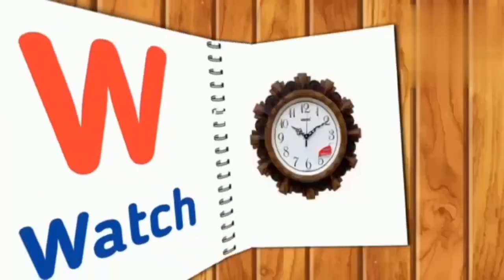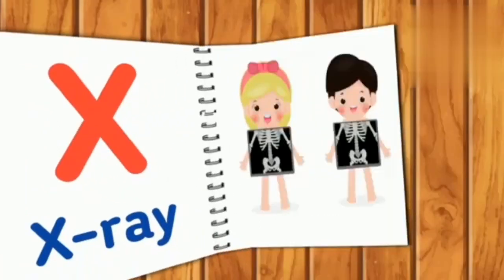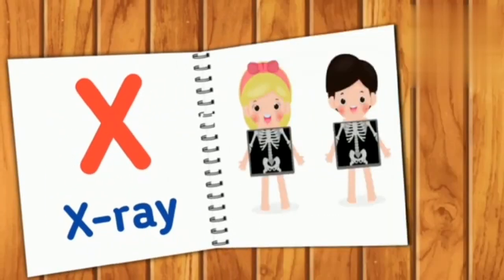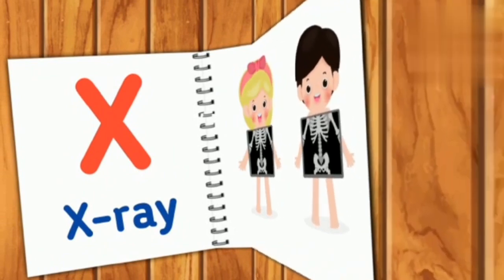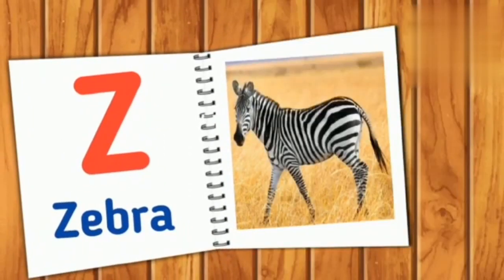W for watch. W-A-T-C-H. X for X-ray. X-R-A-Y. Y for yak. Y-A-K. Z for zebra. Z-E-B-R-A.